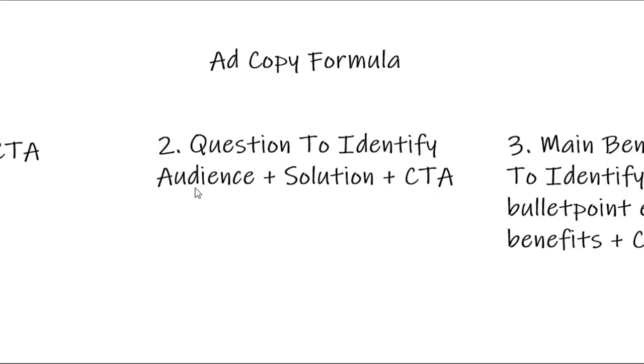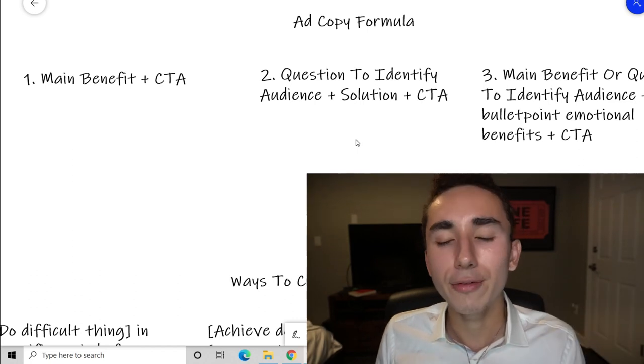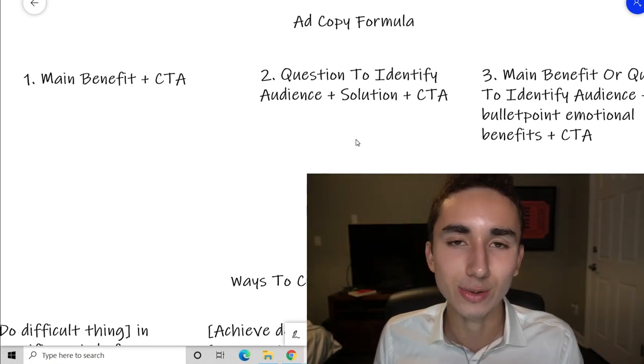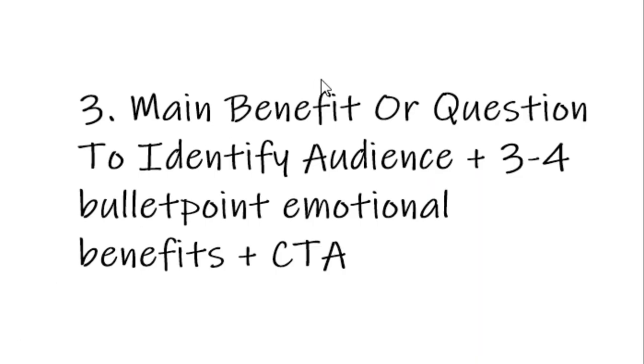The second formula is question to identify your audience, then a solution plus call to action. Start with a question like 'do you want to transform your life?' — they say yes — then pose the solution, which is always your product: 'using this crystal pyramid, you will notice an increase in your energy and productivity.' Follow that with a CTA like 'check out these amazing pyramids before we sell out.'